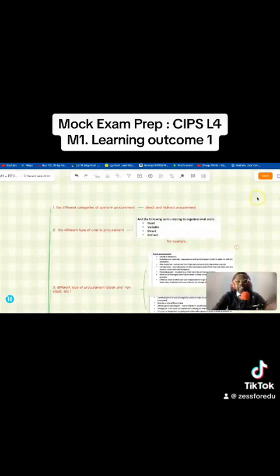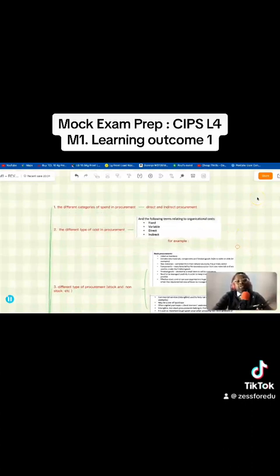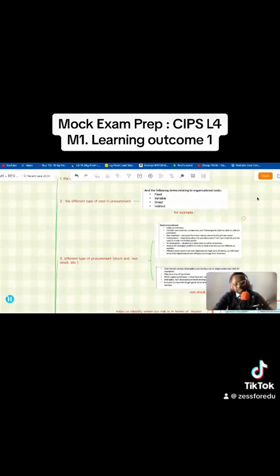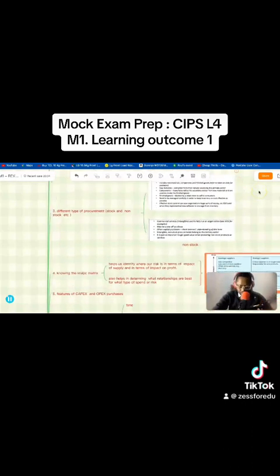Have a look at that - direct and indirect. Two: the different types of cost in procurement - fixed, variable, direct, indirect. Check that out in your study guide. Three: different types of procurement - stock, non-stock. Something you ought to have a look at as well.